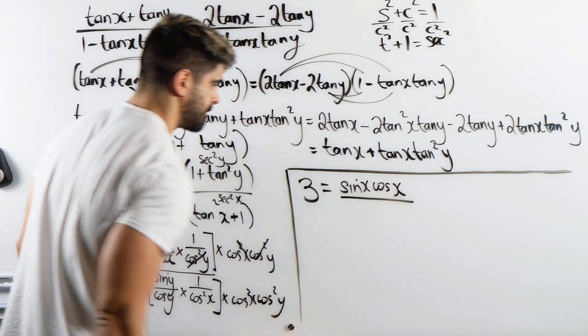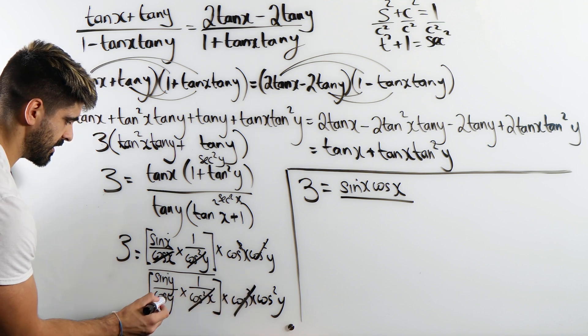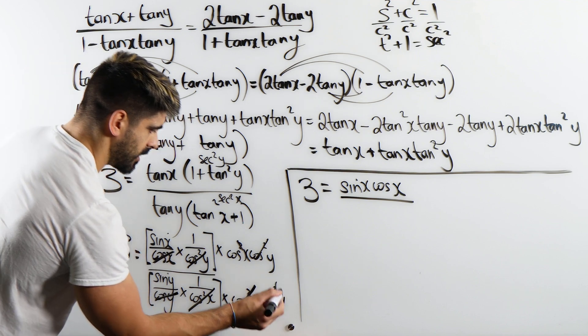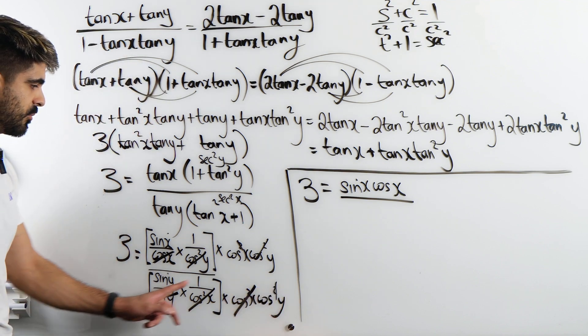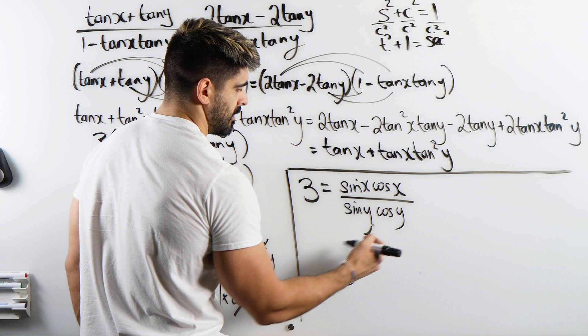Divided by, here cos squared x cancels, and this cos y is going to cancel with that once. So we're left with sine y cos y.